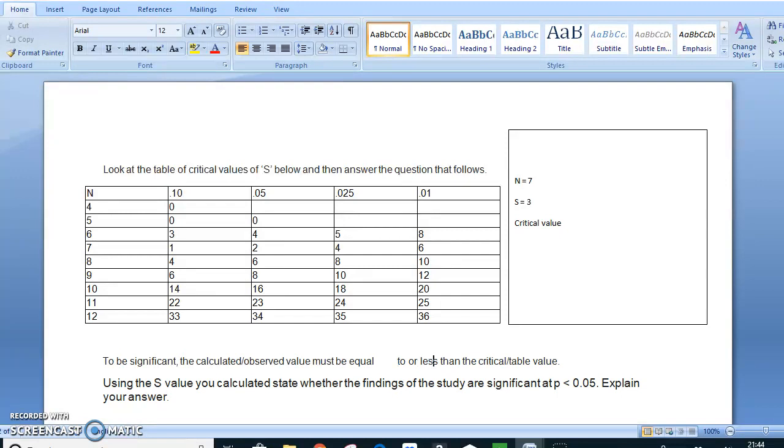So it says here, to be significant, the calculated or observed value, that's another name for calculated value sometimes, must be equal to or less than the critical value table. Now, if you've seen the other videos that I've posted up, I've said to you, it's best to actually write down these two values straight into your paper. So if I said the calculated value or S value, so I'd put the number 3 there because that's the one that we calculated already. And as I said, usually they'd give that to you in the exam for the other stats test. But for the sign test, you are expected to be able to calculate that. And as you saw, it wasn't that difficult.